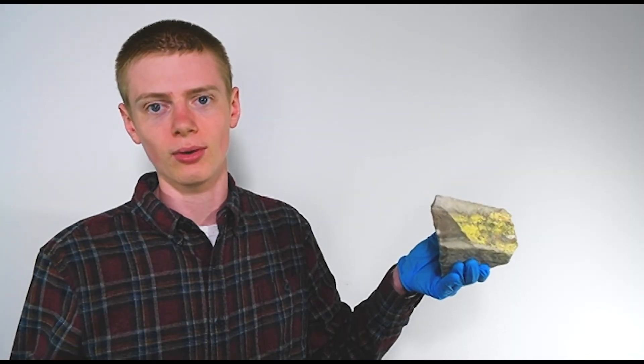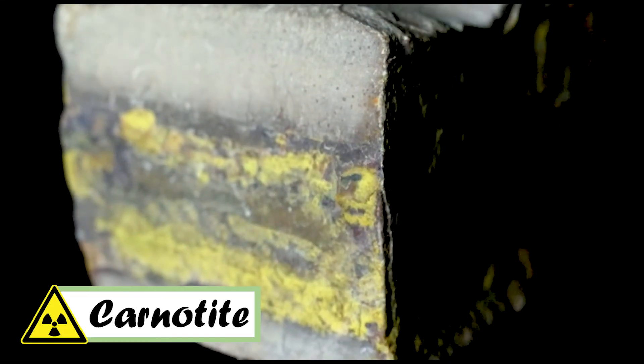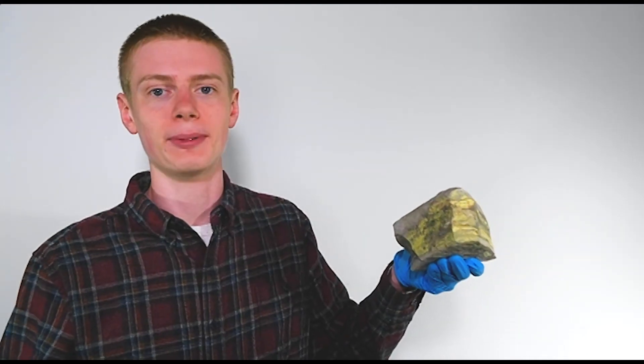This is carnotite, another brilliant yellow uranium mineral. And this one is often found in blocks of sandstone, like the one I have right here. It contains potassium, vanadium, and oxygen, in addition to uranium, of course.